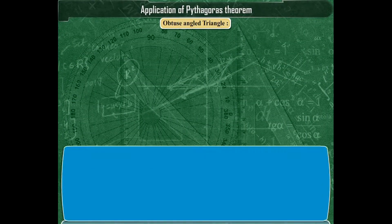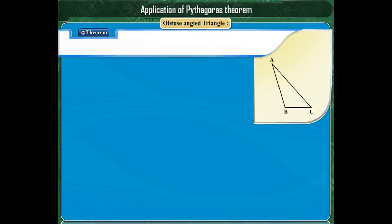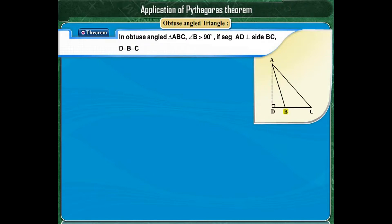Next, we will consider the case of an obtuse-angled triangle ABC, where angle B is an obtuse angle. If segment AD is perpendicular to side BC and point B lies between points D and C, then we have to prove the relation: AC squared is equal to AB squared plus BC squared plus 2 into BC into BD.